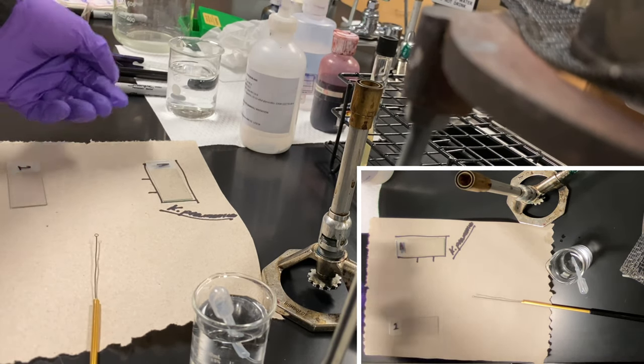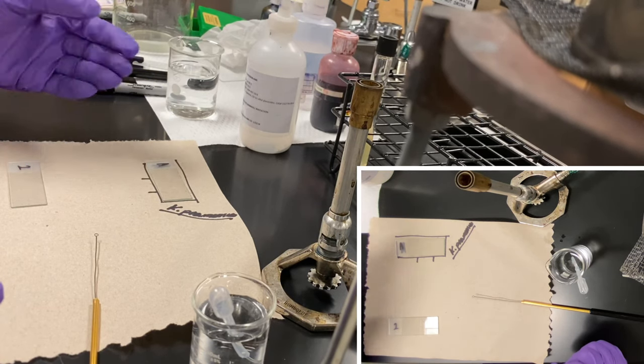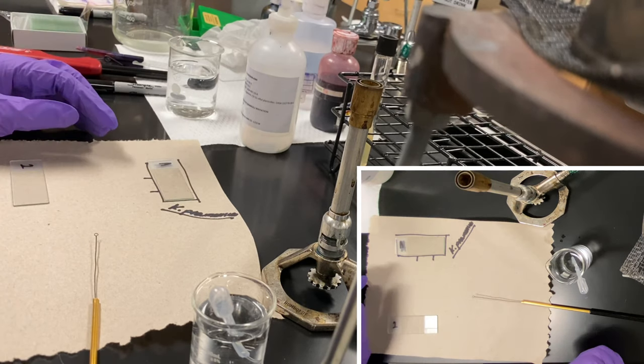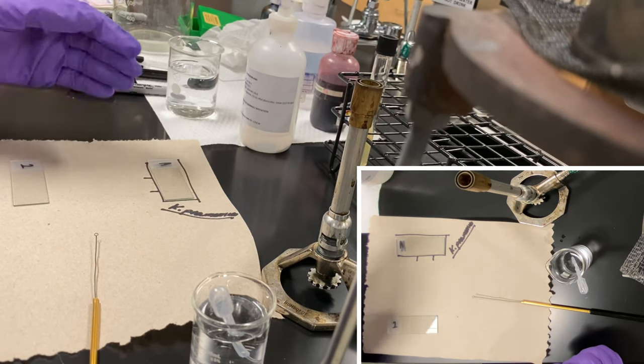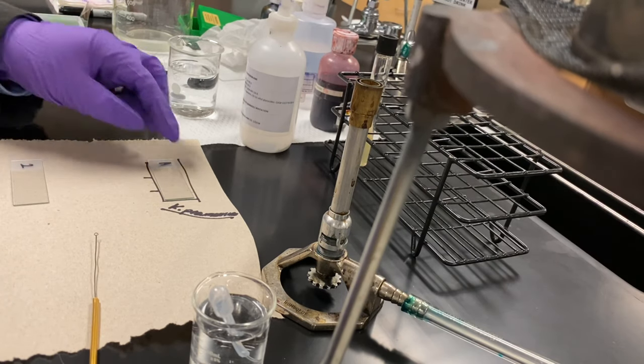Technically there's two ways to go about this. We can let this air dry, which is one method, but what we can do is actually heat dry it using a bench heater. We let it sit there for about a minute to allow it to air dry and then fix it to the actual slide.